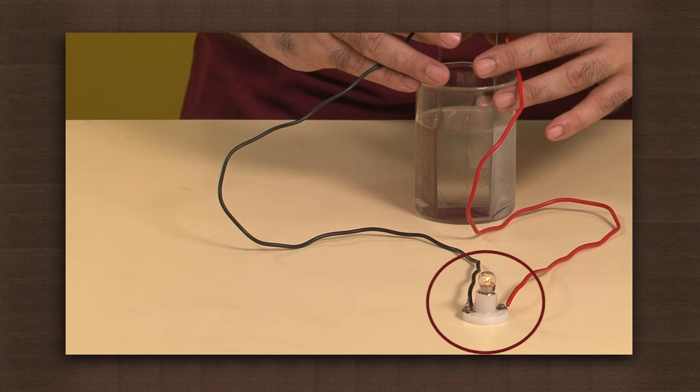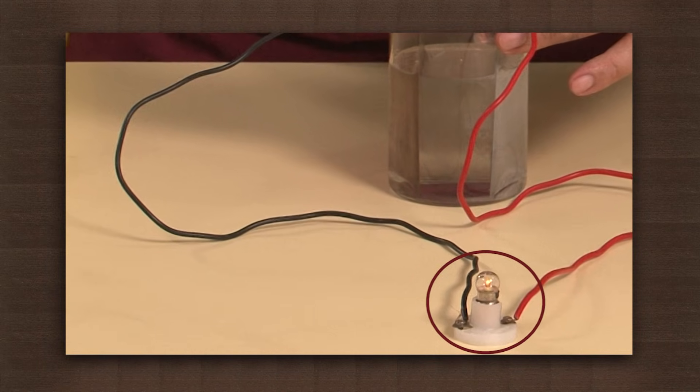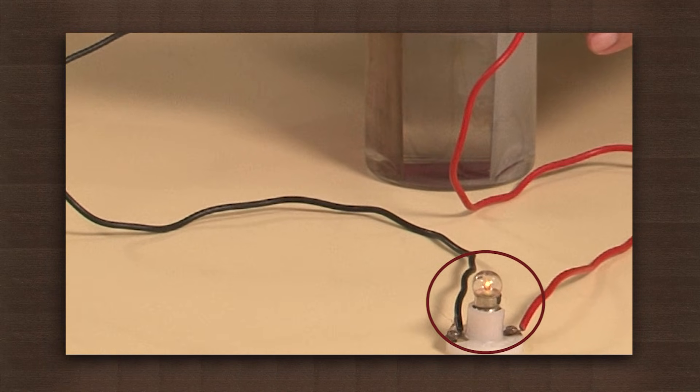The bulb lights up. We can see that the bulb has started to glow, although it is not connected to any external source of electricity. This shows that the setup is generating electricity.